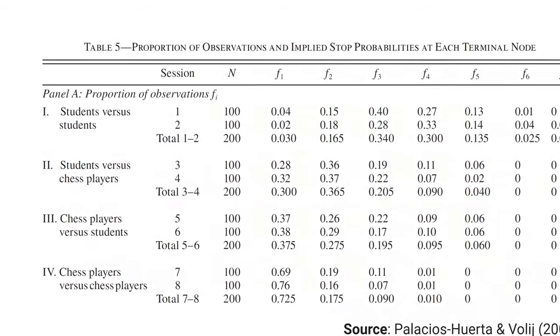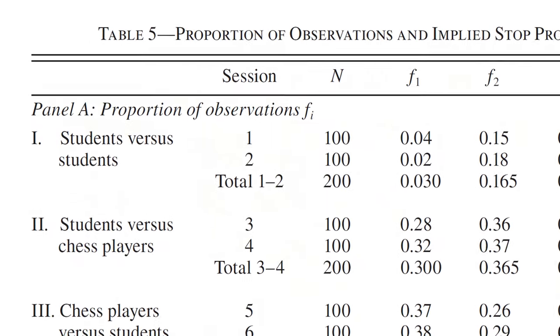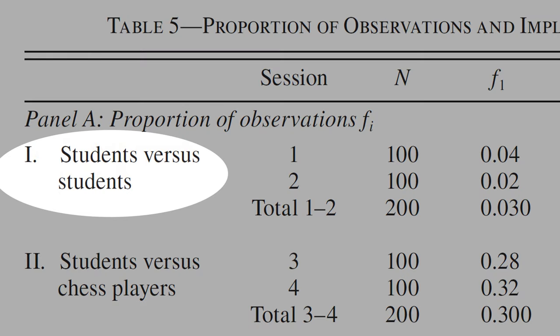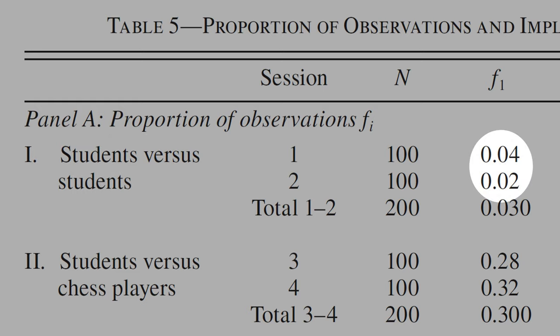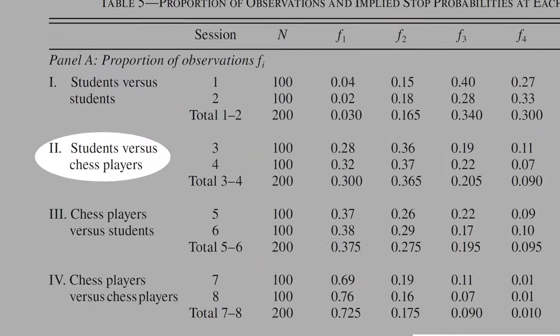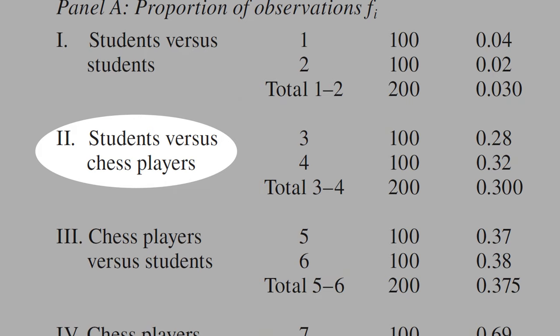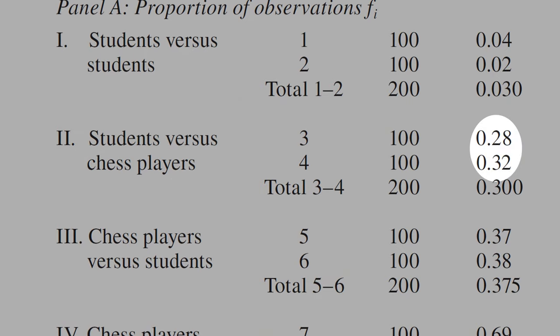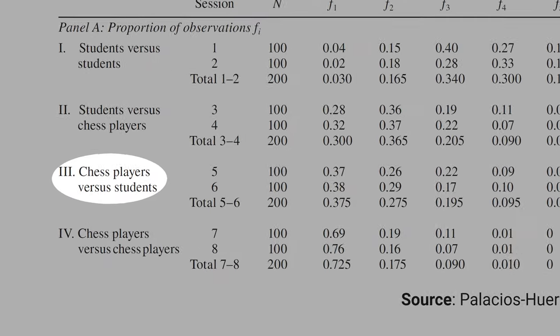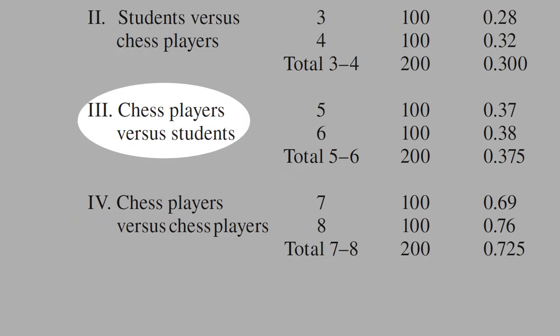This paper also found that people play the centipede game differently depending on the opponent. When students play against students, they almost never stopped at the first node — only 4% stopped in the first section and only 2% in the second section. When students play against chess players, they become smarter: 28 to 32% stopped at the first node. And when chess players play against students, they take it easy — only 37 to 38% stopped at the first node.